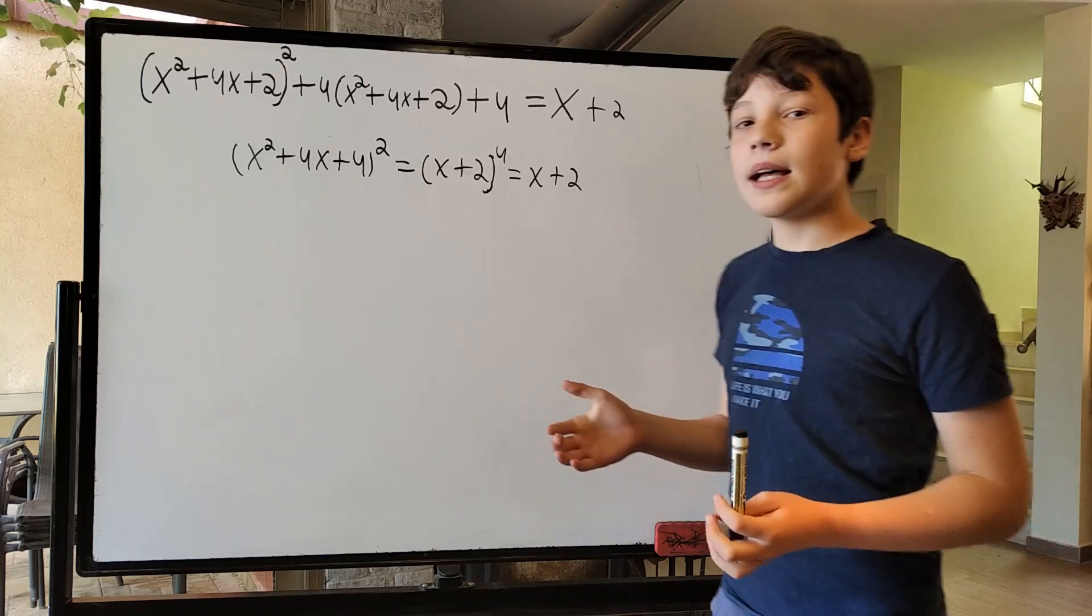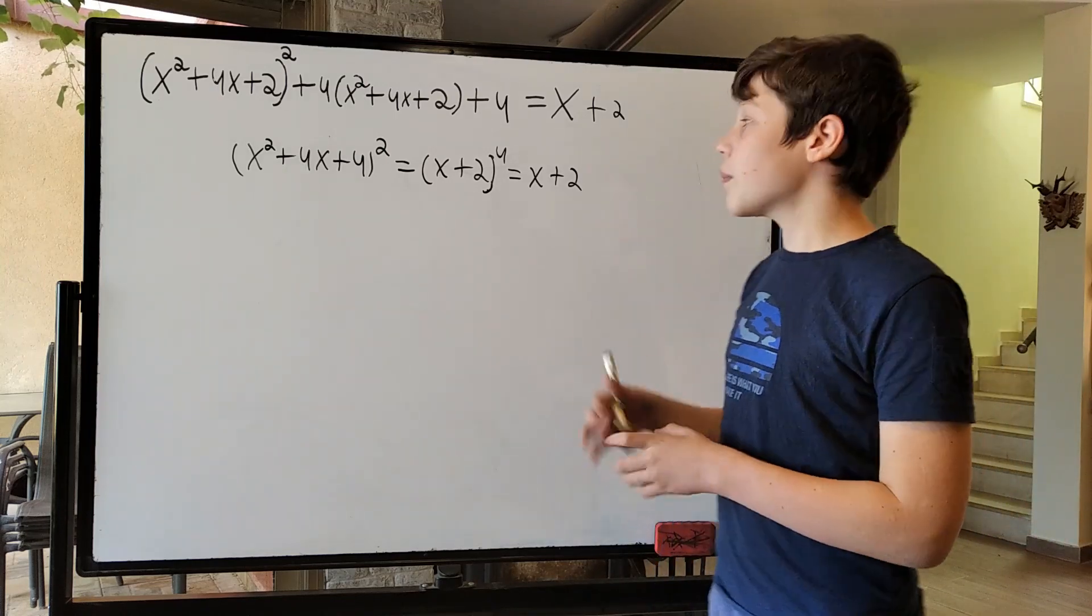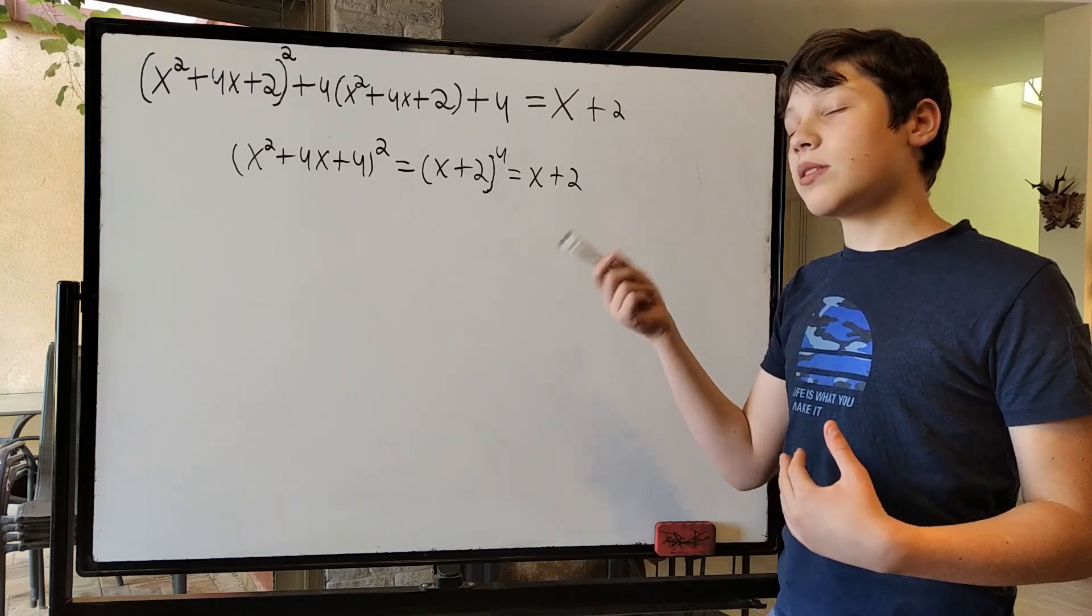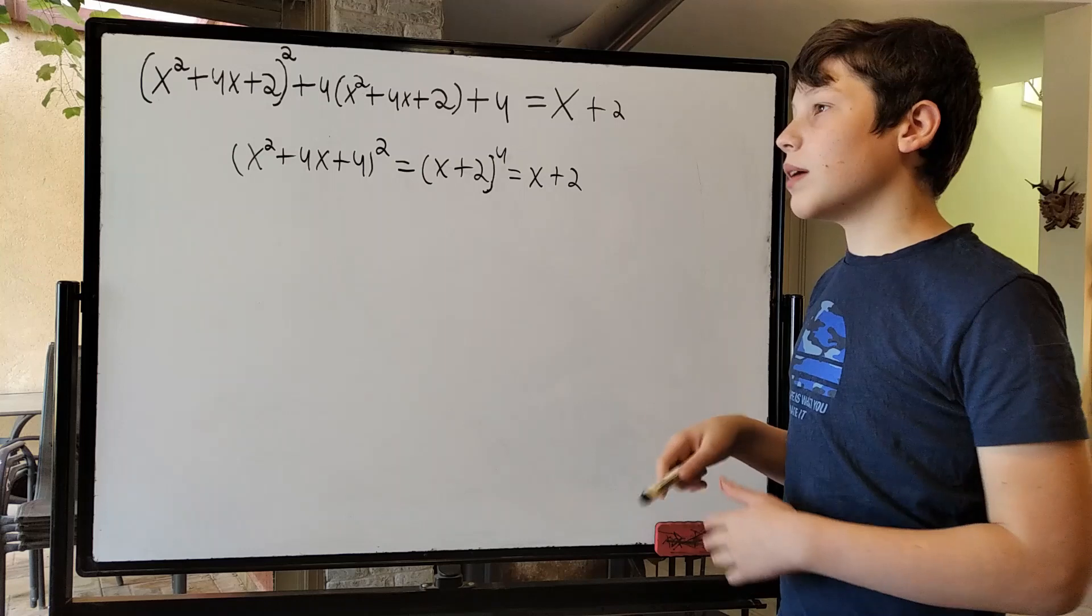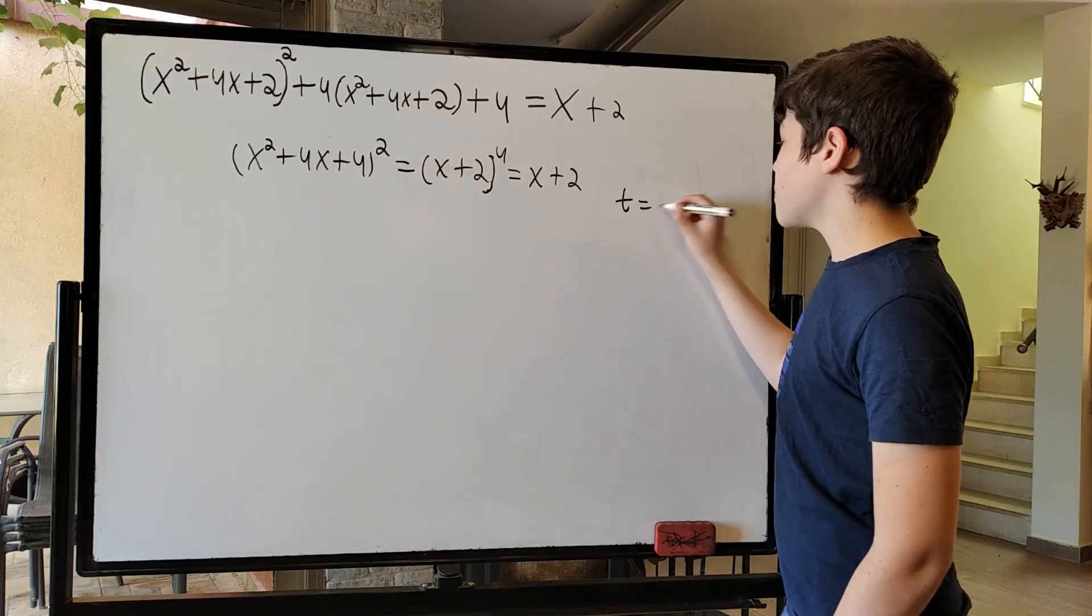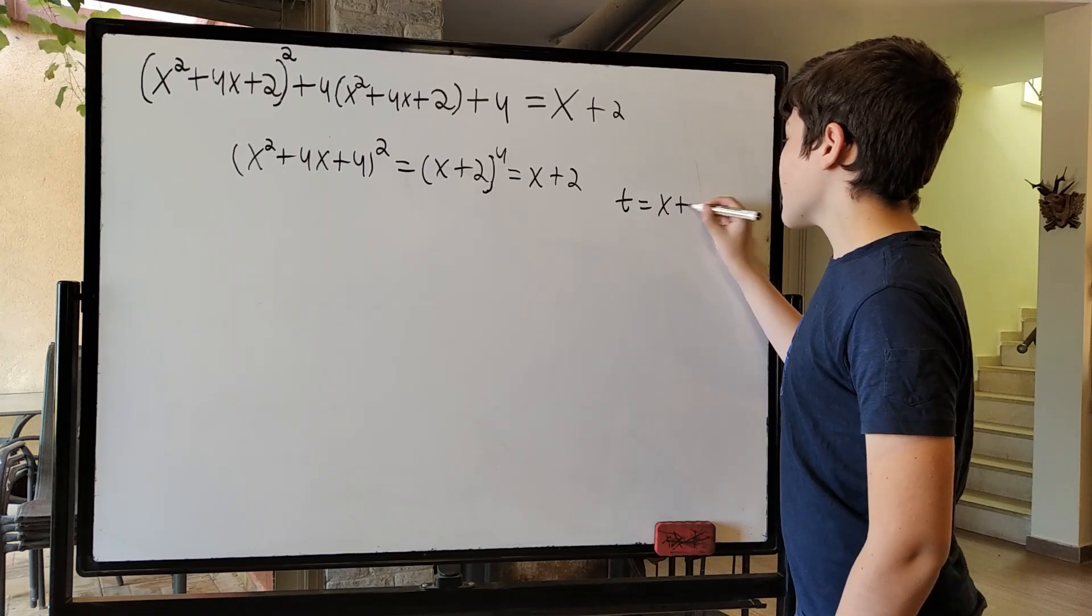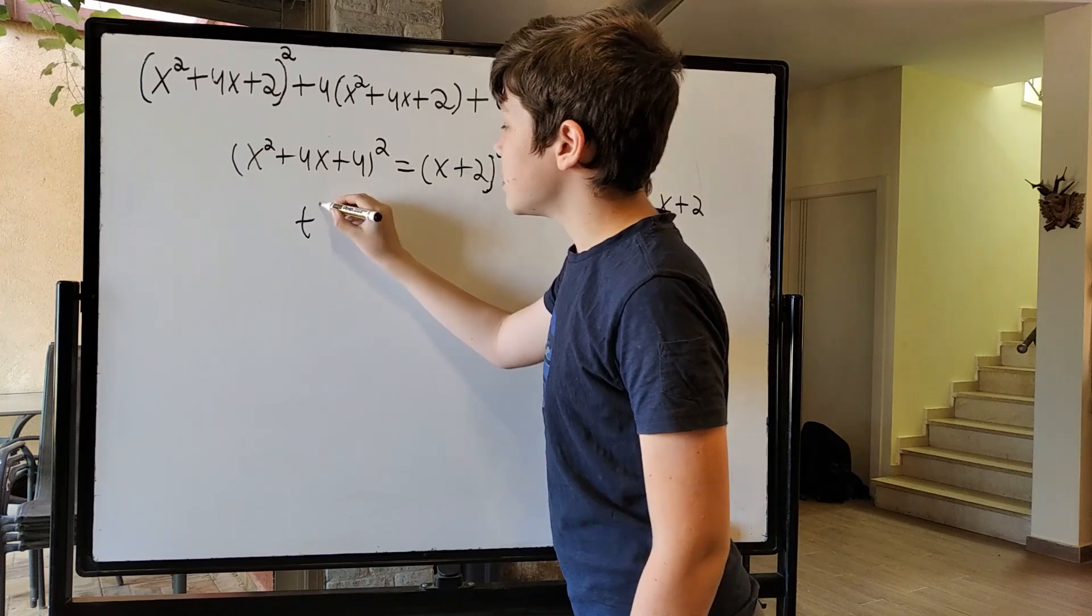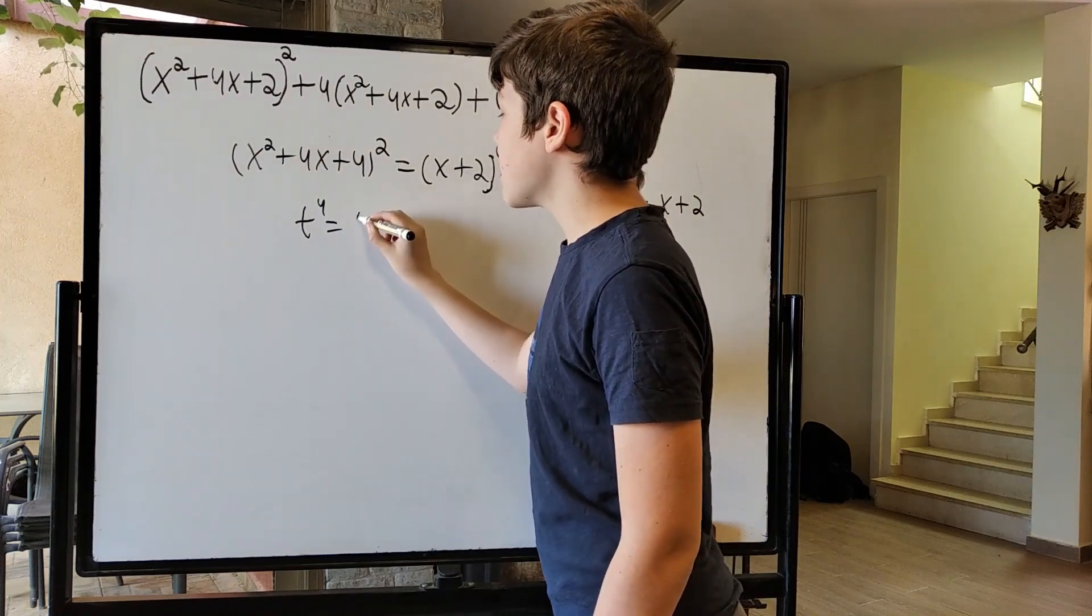So, just to make life a bit easier, I'm going to replace x plus 2 with t, just so I don't have to write x plus 2 in brackets all the time. So let's just set t is x plus 2. So now our equation becomes t to the 4th is equal to t.